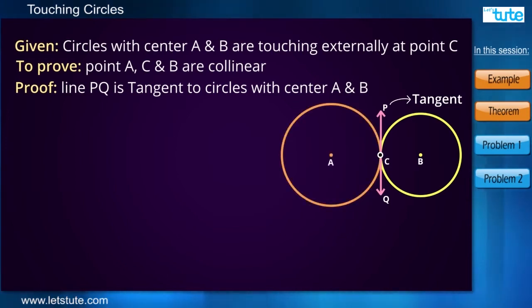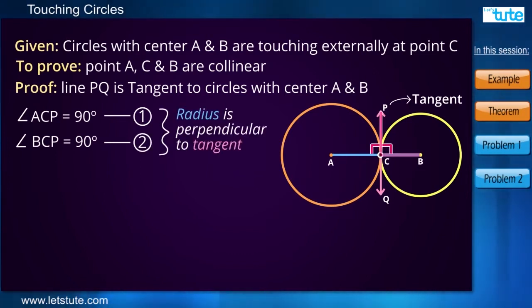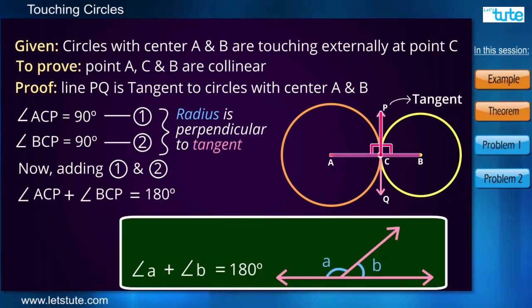Now we know that when a radius is drawn from the center of the circle to the tangent, the radius is perpendicular to the tangent, which means that angle ACP is equal to 90 degrees. And similarly, we can say that angle BCP will also be equal to 90 degrees. Now when we add both these angles, that is angle ACP and angle BCP, their addition will be 180 degrees.